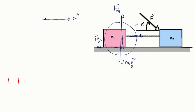Now we shrink the object M1. We have M1g downward, the normal force upward, friction force opposing motion, and the tension T.